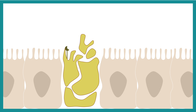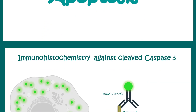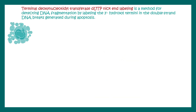Now let's focus on how a researcher can detect apoptosis. First, a researcher can perform immunohistochemistry against cleaved caspase 3 to determine whether a cell is undergoing apoptosis. Accumulation of cleaved caspase 3 is highly indicative that a cell is undergoing apoptosis.